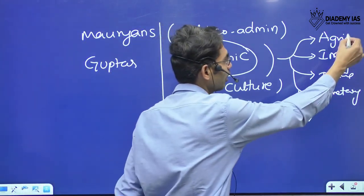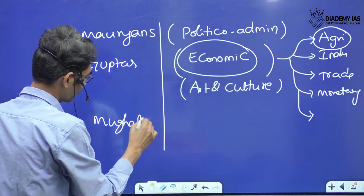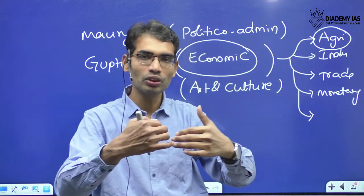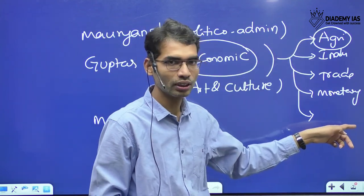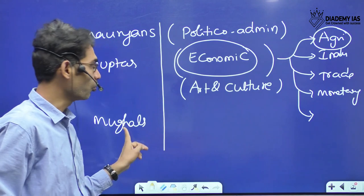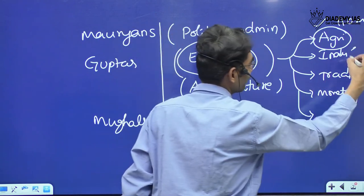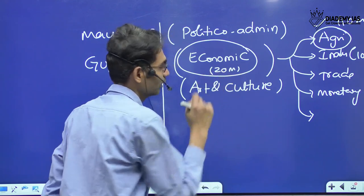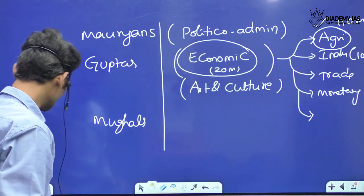Sometimes a question can be purely on agrarian relations. For example, if you take the Mughals, the theme is Mughals, then the economic theme. If the question is about all economic aspects of Mughals, your answer dimensions will cover all of these. But sometimes the question can be only about the condition of agriculture during the Mughal period — that alone can be a 10-mark question. And sometimes all economic conditions together for 20 marks. So we are going to club all the previous year questions under these categories.